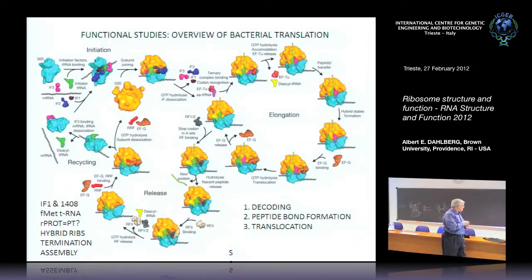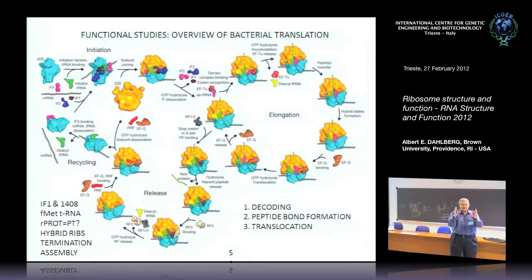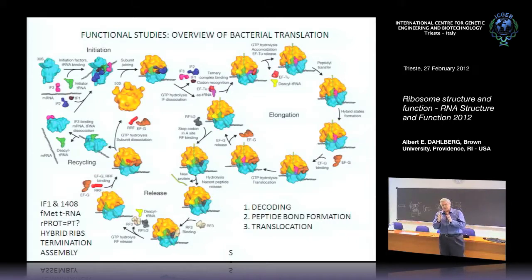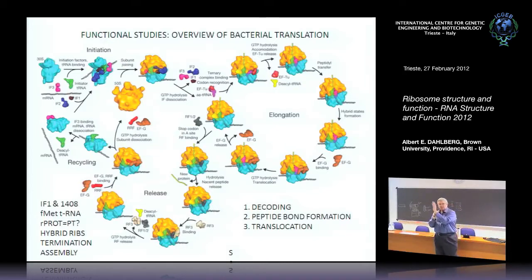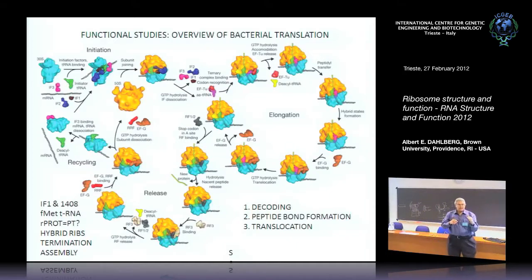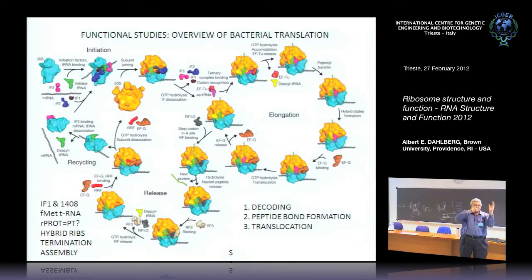Hybrid ribosomes: early on Watson wrote a review on protein synthesis where tRNAs would go into the A site, move to the P site, move to the E site. It was later shown that ribosomes actually move through these sites in a hybrid fashion—from A site to P site and so forth, creating what are called hybrid states. In a related experiment, E. coli ribosomes and Thermus thermophilus ribosomes—both bacteria that diverged a couple hundred million years ago—were mixed: 30S from E. coli with 50S from Thermus and vice versa.